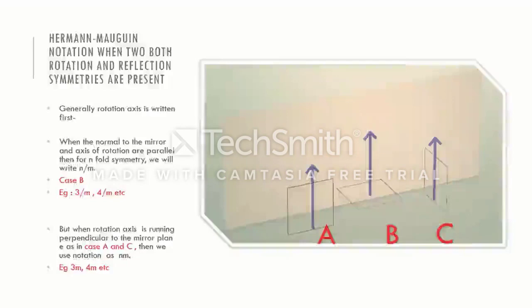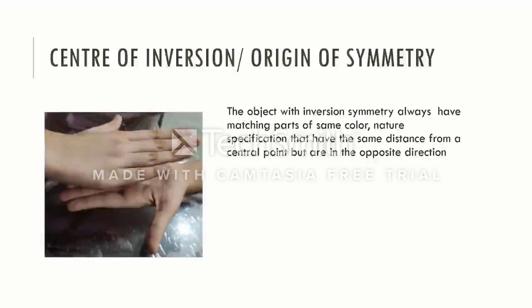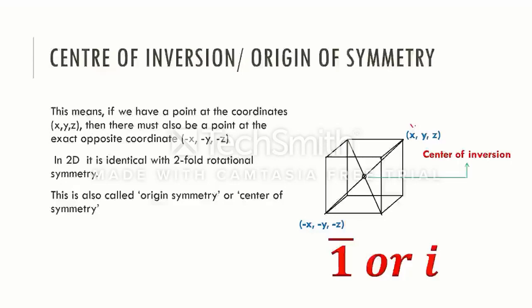Let us now talk about the last symmetry operation, that is inversion symmetry operation. The object with inversion symmetry always has matching parts of the same color, nature, and specification at the same distances from its central point but are in opposite directions. This means if we have a point at the coordinate x, y, z, then there must also be a point at the exact opposite coordinate minus x, minus y, and minus z.